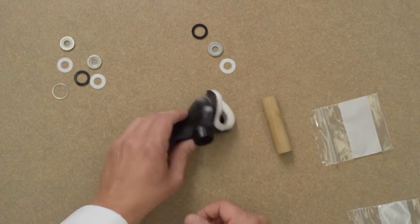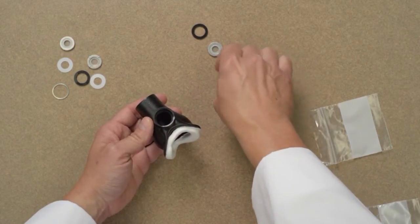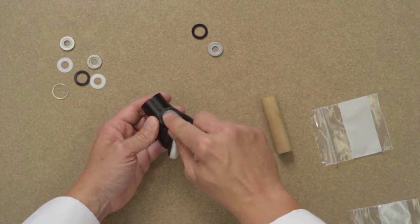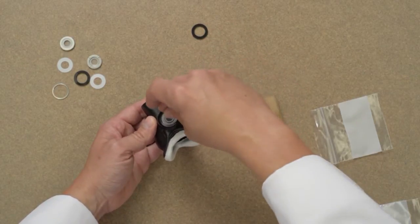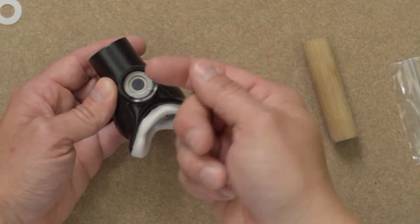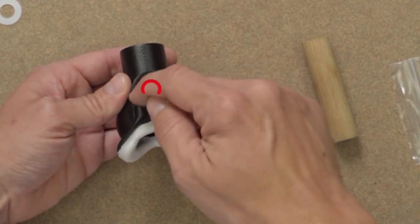First insert the Teflon washer into the port. Next set the check valve onto the port. The check valve should have the tabs facing out and the curve of the valve flap should be towards the inhale port of the mask.